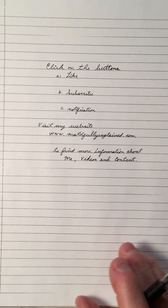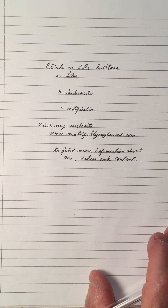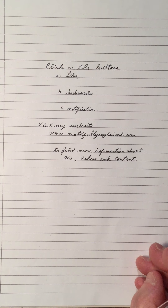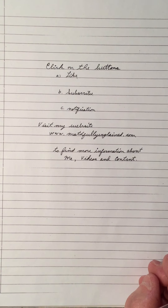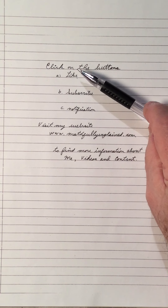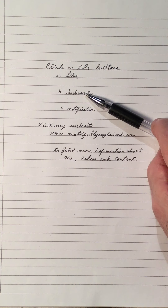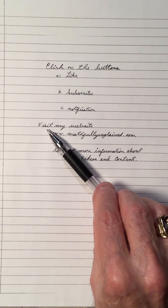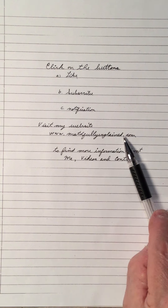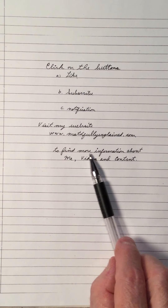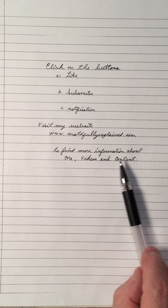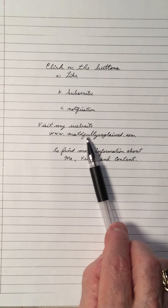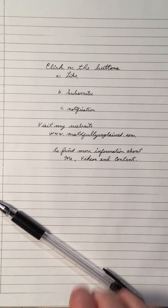This pattern ensures a fraction does not have a complex or imaginary number in the denominator — a fraction should always have a real number as its denominator. If you'd like, click the like button, subscribe button, and the notification bell. Visit my math website at www.mathfullyexplained.com for more information and videos. Thank you for viewing.